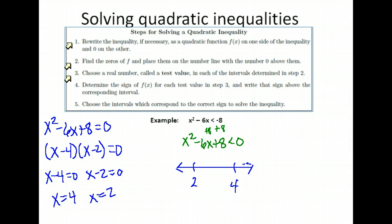Now step 3: choose a real number — a test value — in each interval. We need to pick a test value to the left of 2; I'll use 1. We need a number between 2 and 4; 3 works perfectly. And we need a number bigger than 4; I'll go ahead and pick 5. You can pick any number as long as it fits in the interval you're working with.